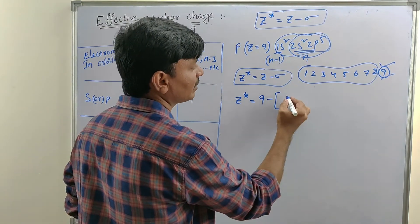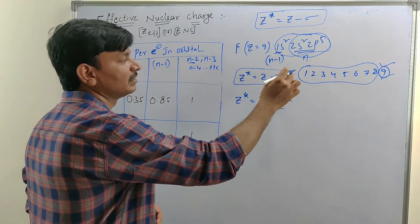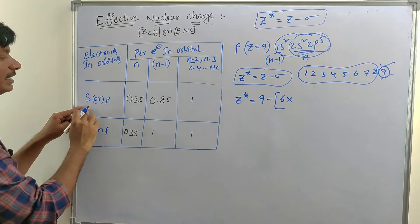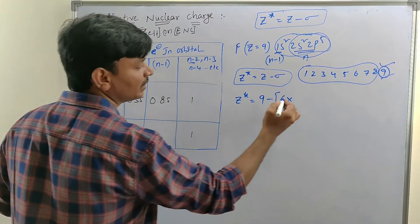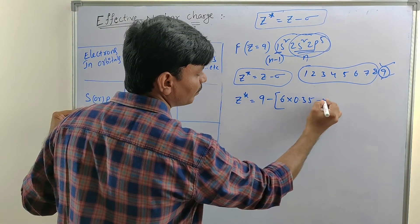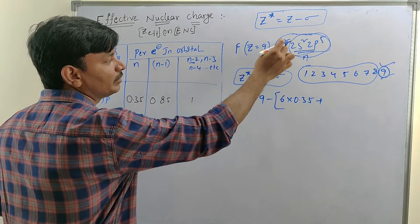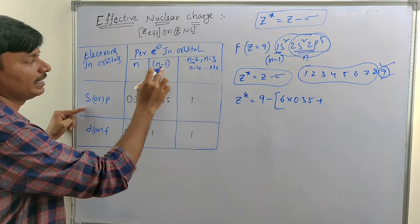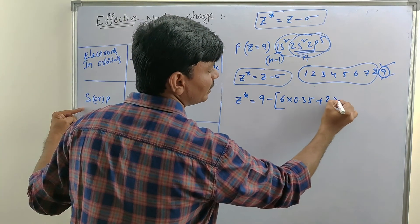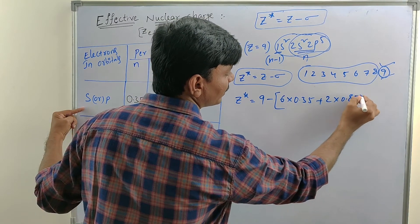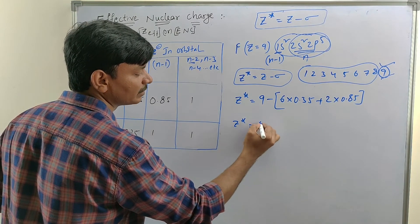For fluorine: Z* = Z − sigma = 9 − sigma. In the nth shell, there are 6 remaining electrons in S and P subshells, each with value 0.35: 6 × 0.35. The n−1 shell has 2 electrons in the S subshell, each with value 0.85: 2 × 0.85. Calculating: Z* = 9 − (6×0.35 + 2×0.85) = 9 − 3.8 = 5.2. That is the effective nuclear charge of fluorine.